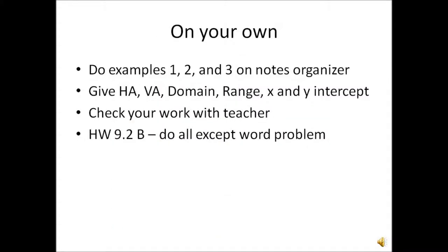Now it's your turn to try. On your notes organizer, please do examples 1, 2, and 3. Give the horizontal asymptote, vertical asymptote, domain, range, x and y-intercept. You can graph using technology or using a table of values from x equals negative 5 to x equals positive 5. Check your work with the teacher. For homework, you're going to do worksheet 9-2b — please do all problems except the word problem. Thanks so much for watching and have a great day.